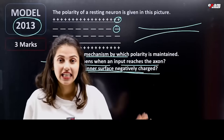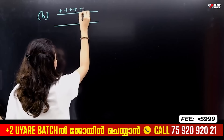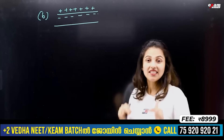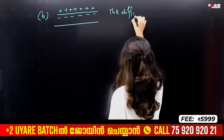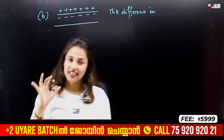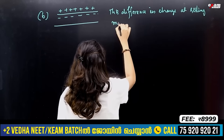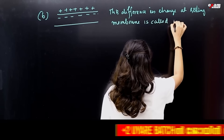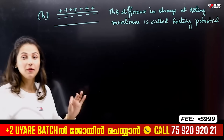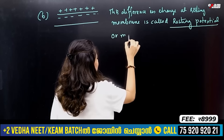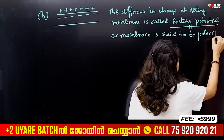In the resting state, the outside is positively charged and the inside is negatively charged. This electrochemical charge difference is called resting potential. This difference in charge at the resting membrane is called resting potential. The membrane of the axon is said to be polarized.